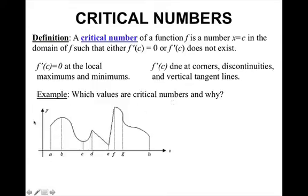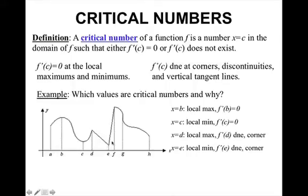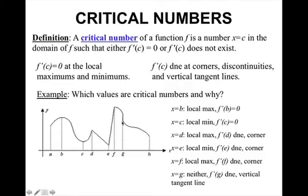Let's try a problem — in this graph, identify which values are critical numbers and why. At x equals b, you have a local max with a horizontal tangent line, so the derivative equals 0. At x equals c, you have a local min, derivative equals 0. At x equals d, you have a local max where the derivative does not exist — you have a corner. At x equals e, you have a local min, derivative does not exist — a corner. At f, local max, derivative does not exist — a corner. x equals g is neither, because f of g does not exist and there is a vertical tangent line. When there's a vertical tangent line, it is neither a max nor a min.